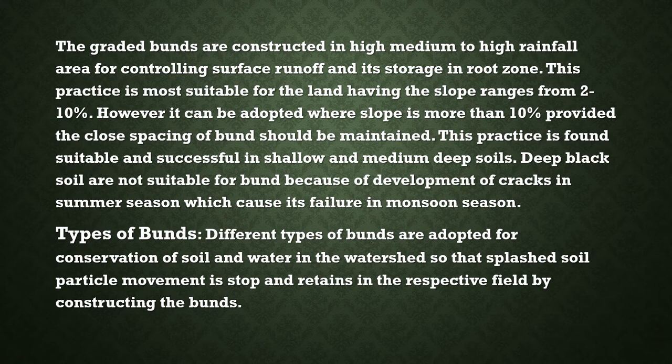There are two main types of bunds: contour bunds and graded bunds. Different types of bunds are adapted for conservation of soil and water in the watershed, so that splashed soil particles' movement is stopped and retained in the respective fields by constructing the bunds.